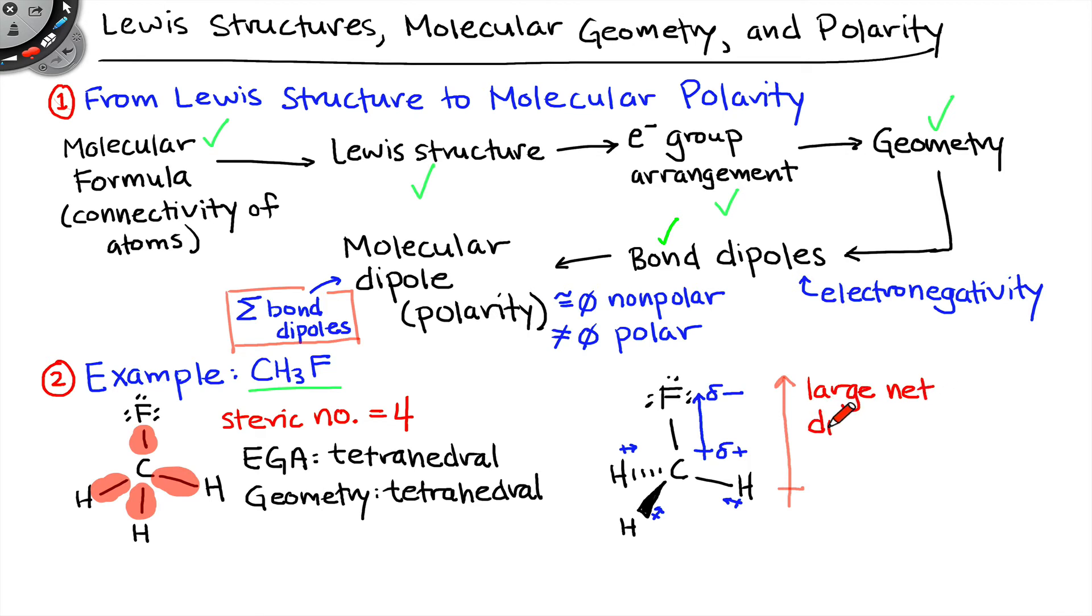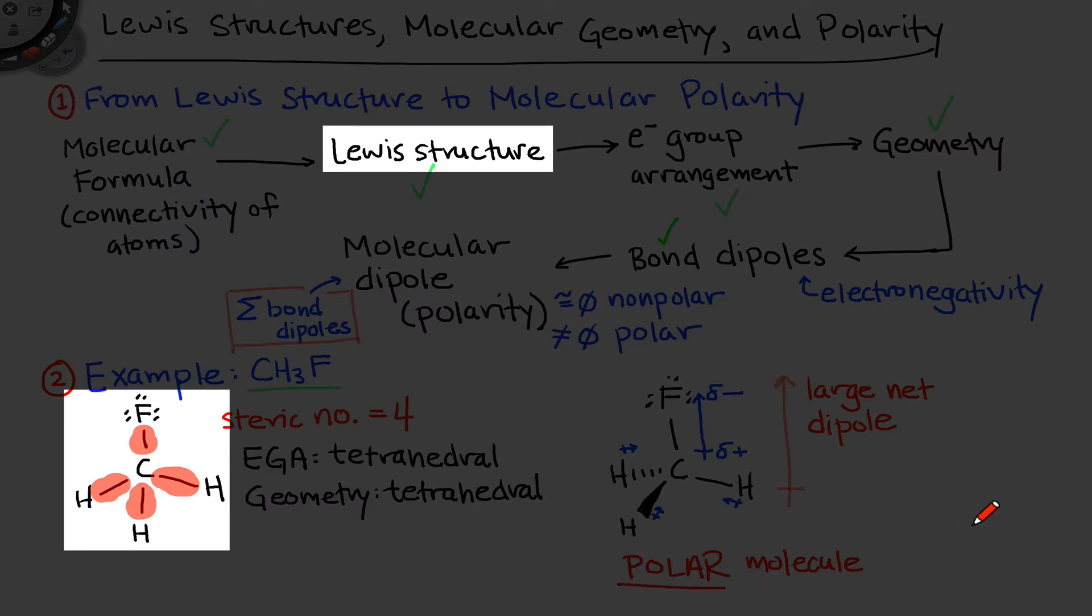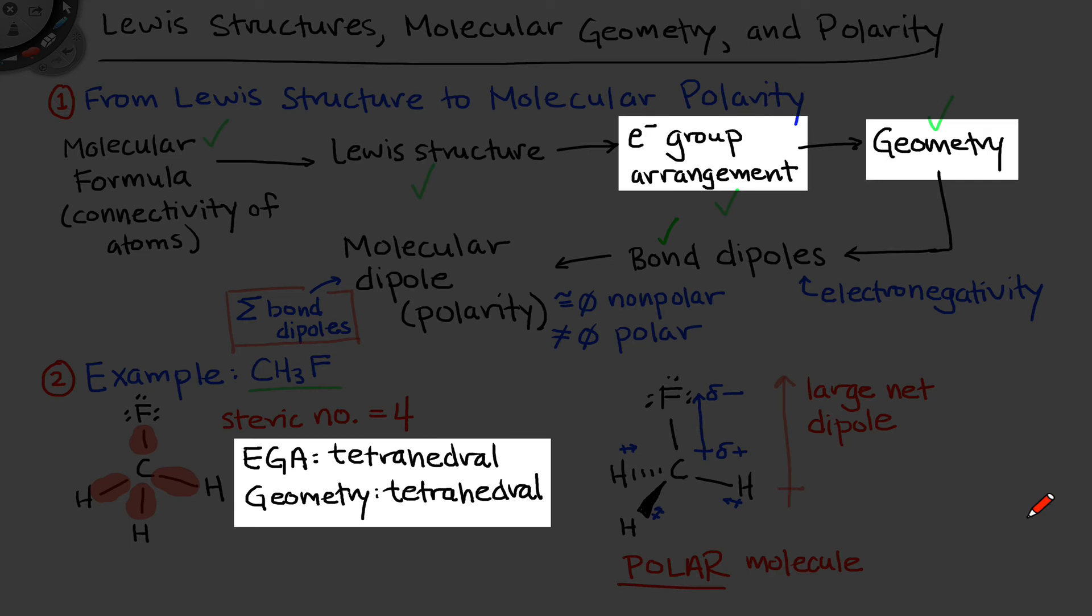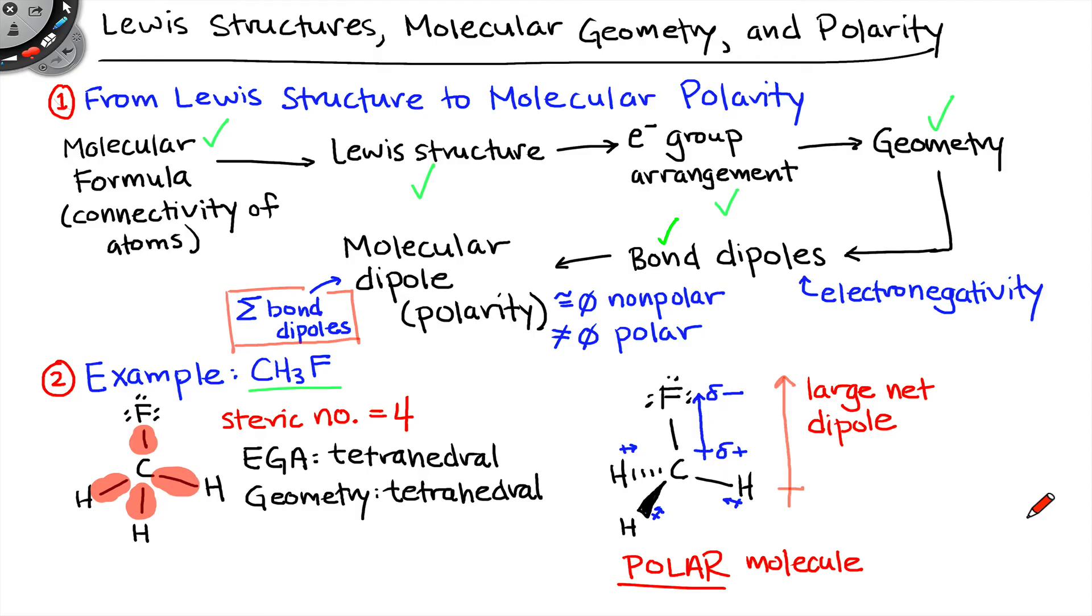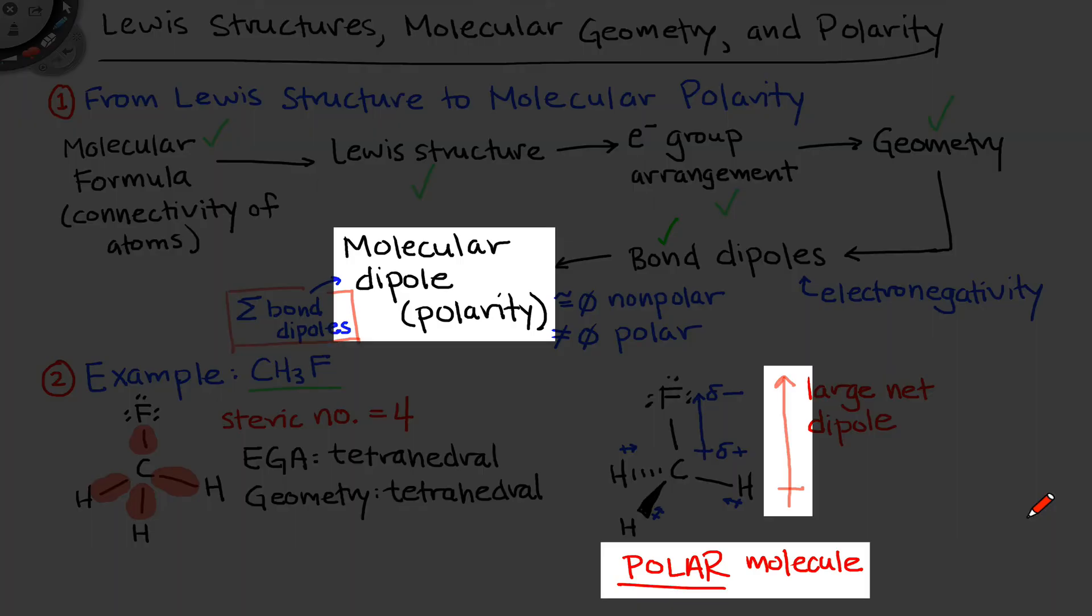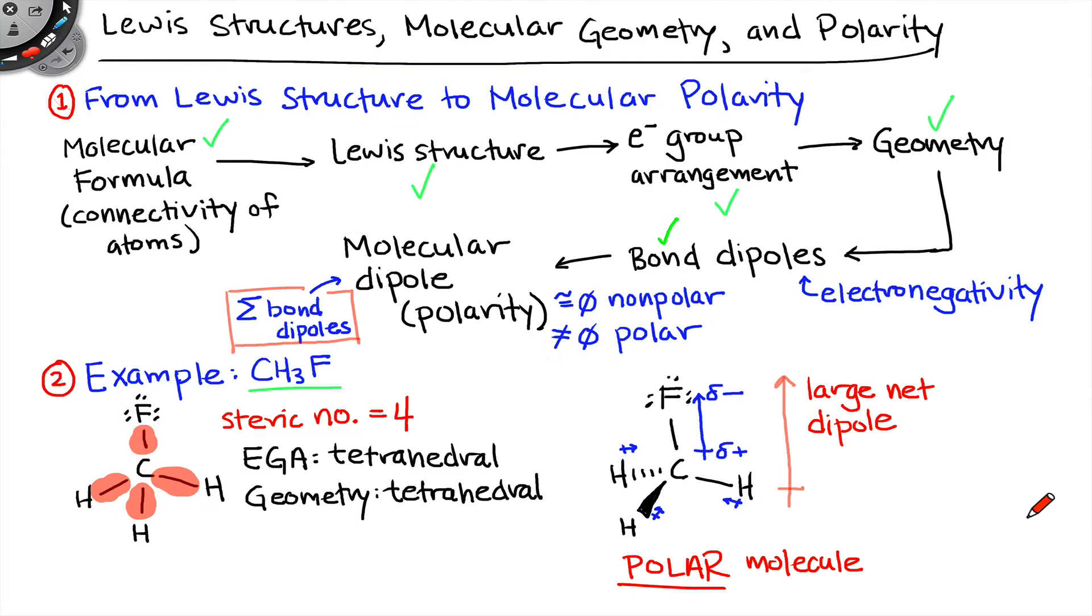We can see that this is a large net molecular dipole, and it's definitely non-zero. From this, we can directly conclude that this is a polar molecule. Notice here, just to recap, that we started with the Lewis structure based on the connectivity built into the molecular formula, reasoned through the electron group arrangement and geometry, considering both of those is important. Then we looked at electronegativity to assess the bond dipoles, and finally determined the molecular dipole as a vector sum over the bond dipoles. The conclusion here is that CH3F is a polar molecule.